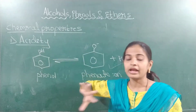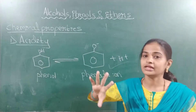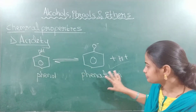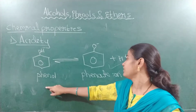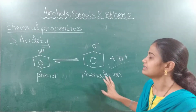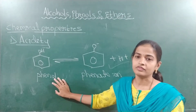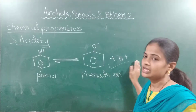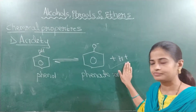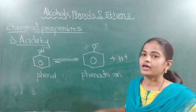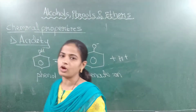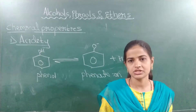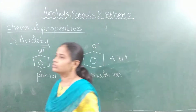Phenate ion is more stable than phenol; therefore it has the tendency to release H⁺ (a proton). Now write the resonance structures of phenol — you have studied how to write the resonance structures of phenol. Resonance structures of phenol: phenol shows the +R effect.